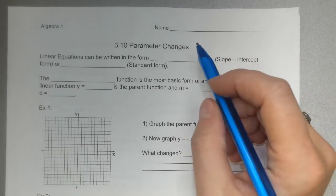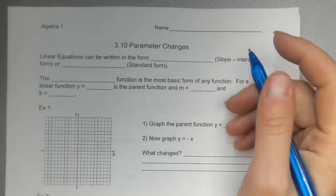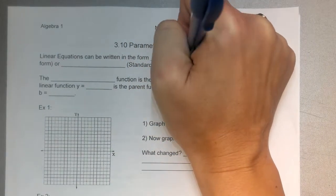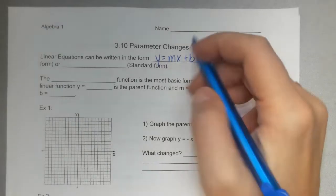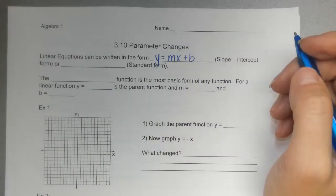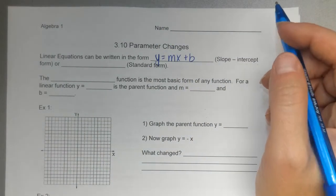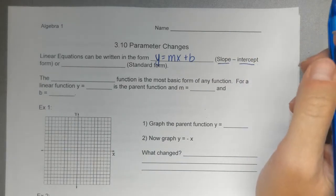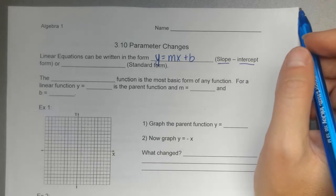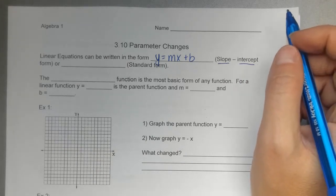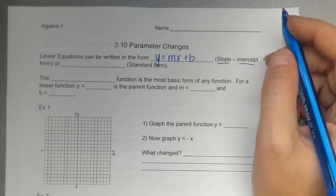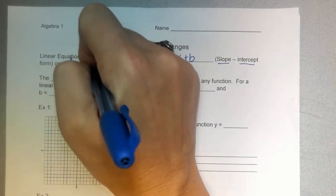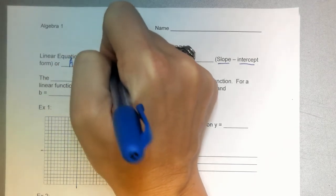Just to review, a linear equation is something that can be written in the form y equals mx plus b. That should sound familiar — y equals mx plus b. You might also hear that called the slope-intercept form, or the standard form, which we learned in class today, which is ax plus by equals c.